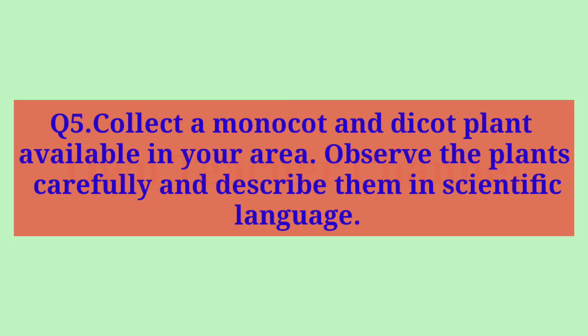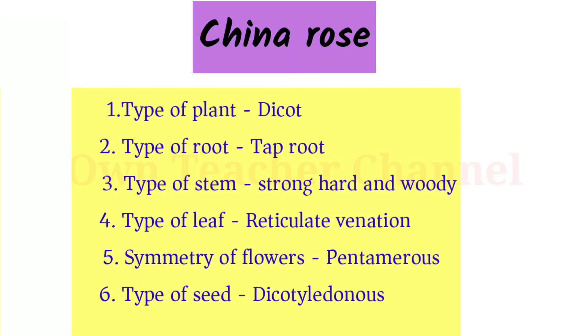Question five: Collect a monocot and a dicot plant available in your area. Observe the plants carefully and describe them in scientific language. China Rose — Type of plant: dicot. Type of root: taproot. Type of stem: strong, hard, and woody. Type of leaf: reticulate venation. Symmetry of flowers: pentamerous. Type of seed: dicotyledonous.